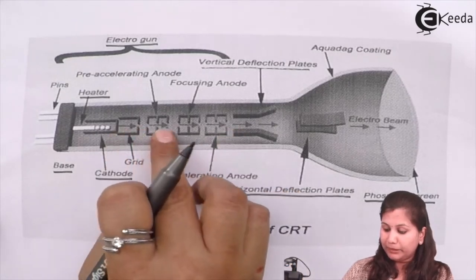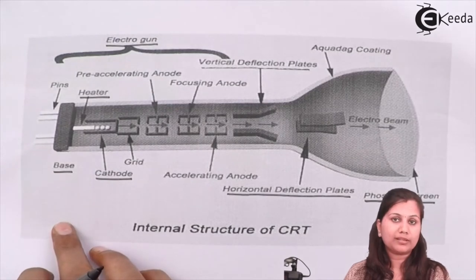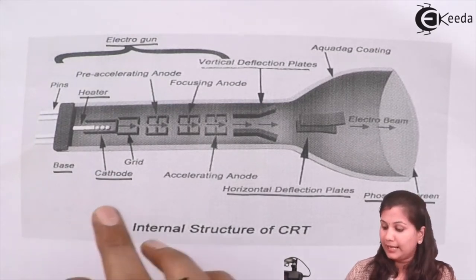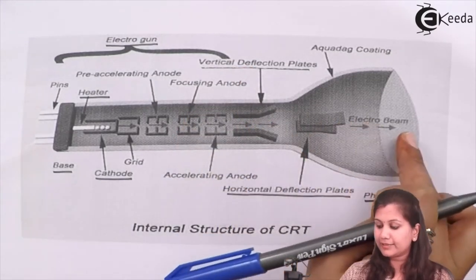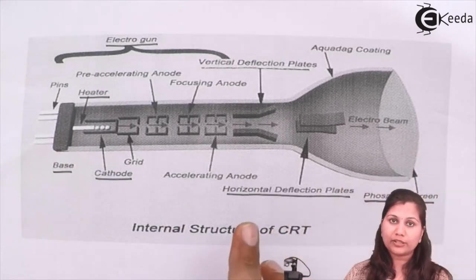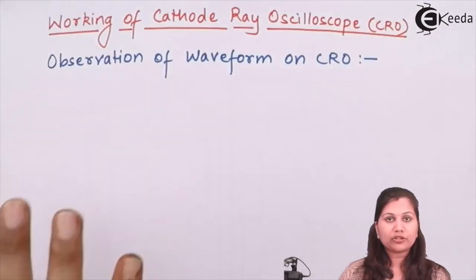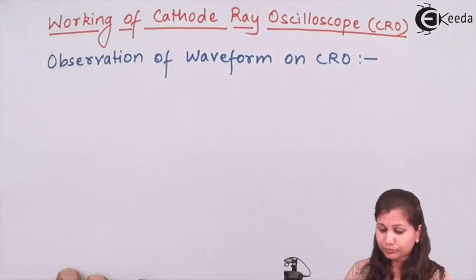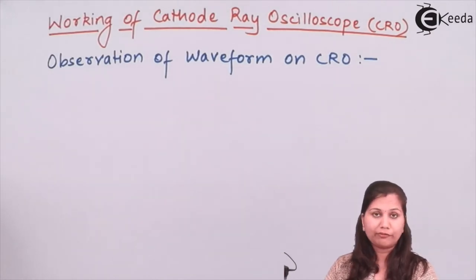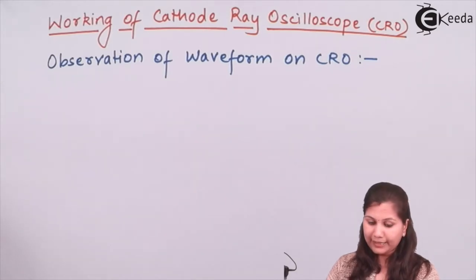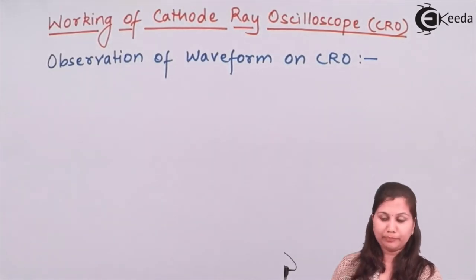When the beam of electrons comes out of the electron gun, it will be a sharply focused, accelerated beam. This beam of electrons then passes through the vertical and horizontal deflection plates and strikes the phosphor screen. The input signal whose waveform we want to observe is applied to the Y plates, that is the vertical deflection plates.